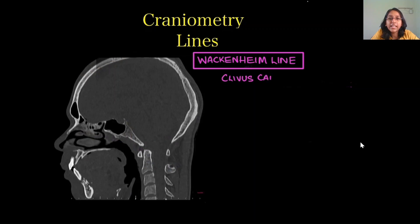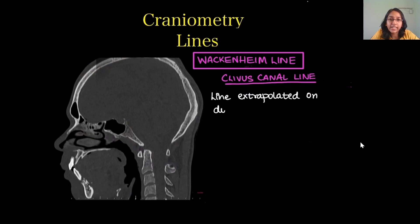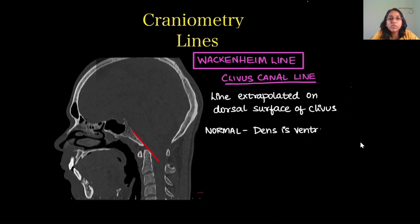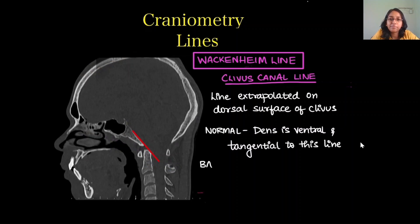Wackenheim's line is also called the clivus canal line. This line is extrapolated along the dorsal surface of the clivus. Normally, the dens is ventral to it — that is, anterior and tangential to this line. In cases of basilar invagination, the dens is above or posterior to this line.